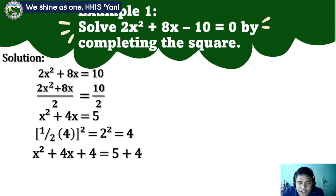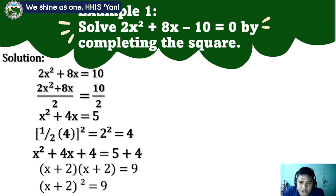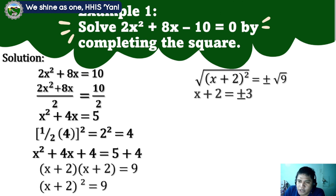x squared plus 4x plus 4 is a perfect square trinomial. The factored form is x plus 2 times x plus 2. Then 5 plus 4 equals 9. In factored form: x plus 2 squared equals 9. We extract the square root: square root of x plus 2 squared equals positive or negative square root of 9. Cancelling the square root, we get x plus 2 equals positive or negative 3. So we have two solutions: x plus 2 equals 3, and x plus 2 equals negative 3.